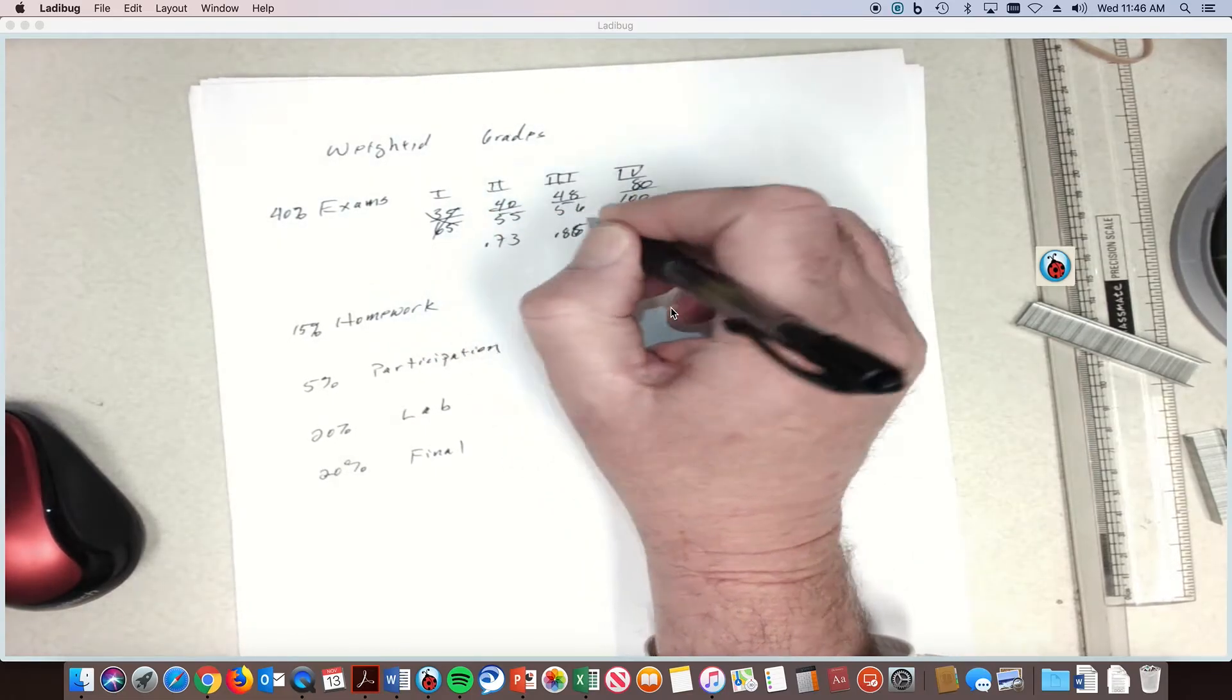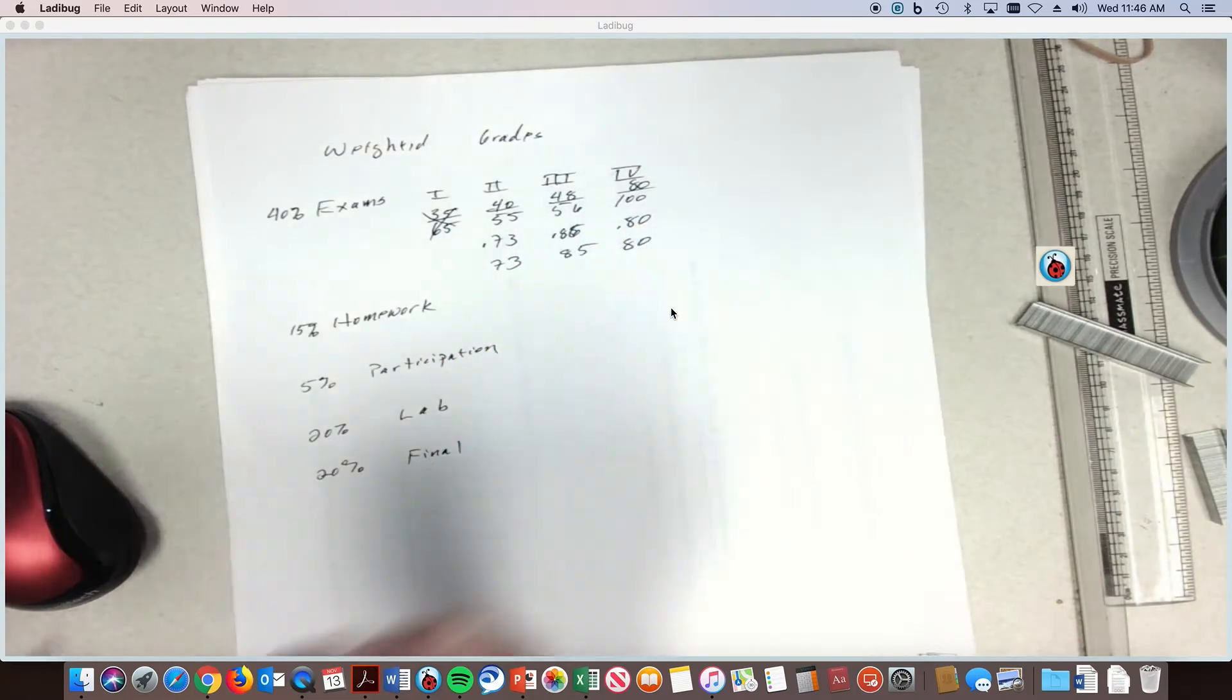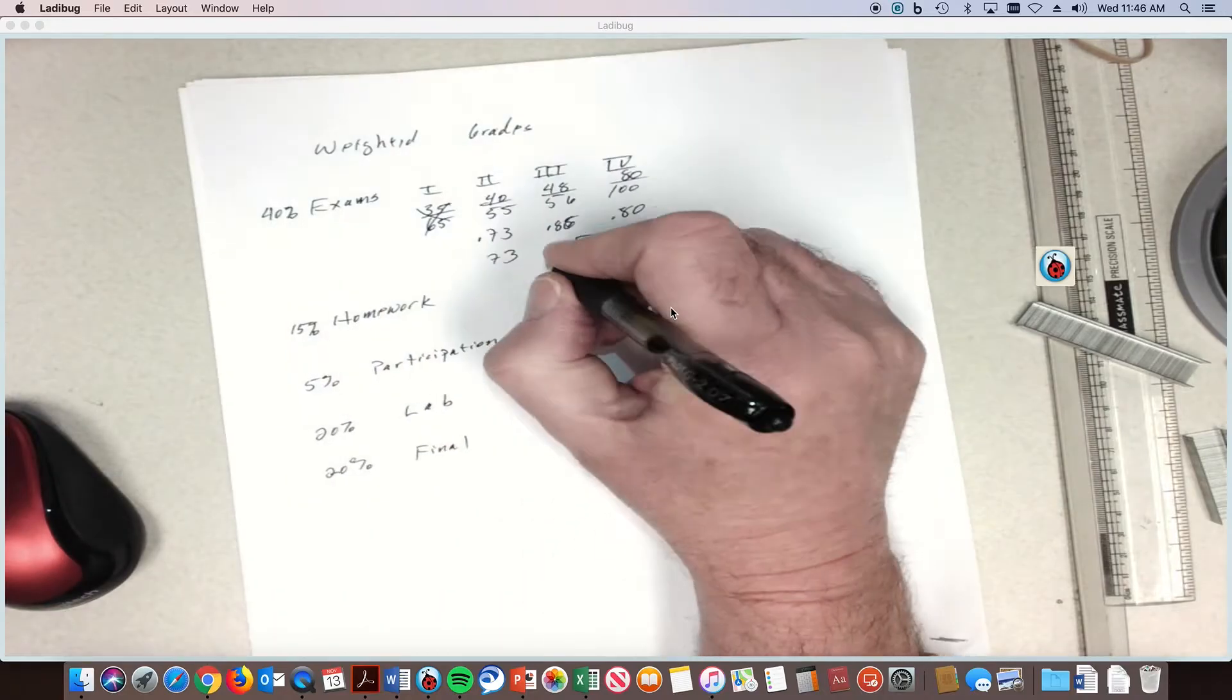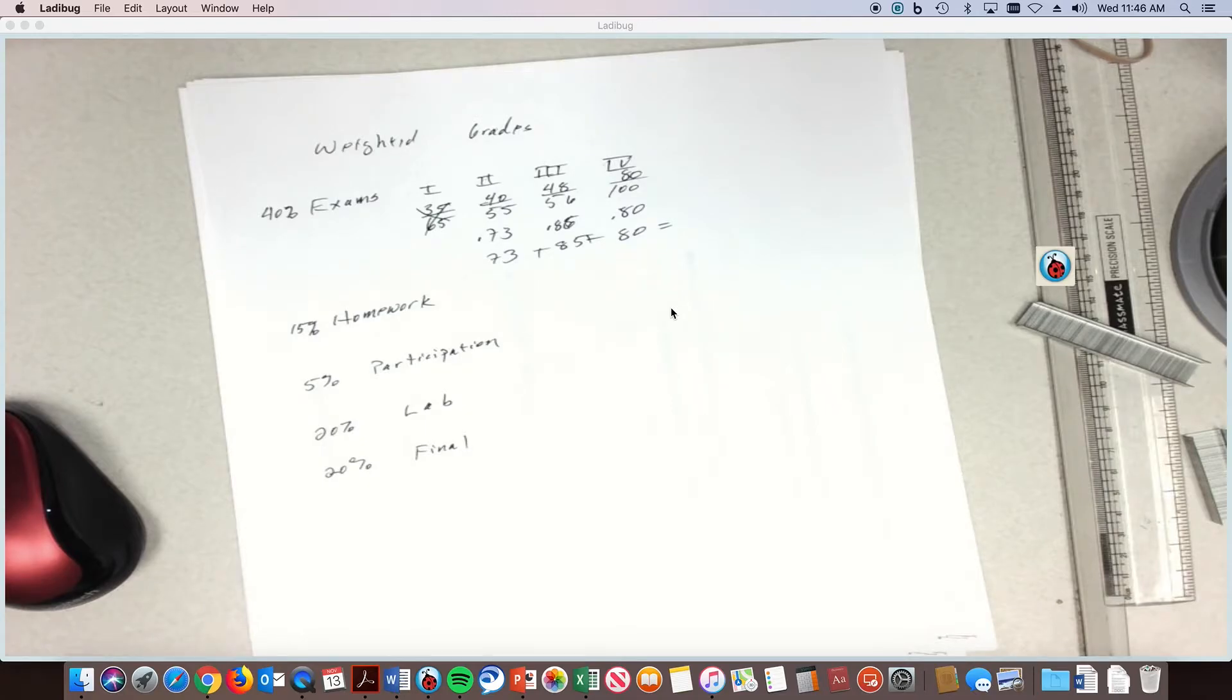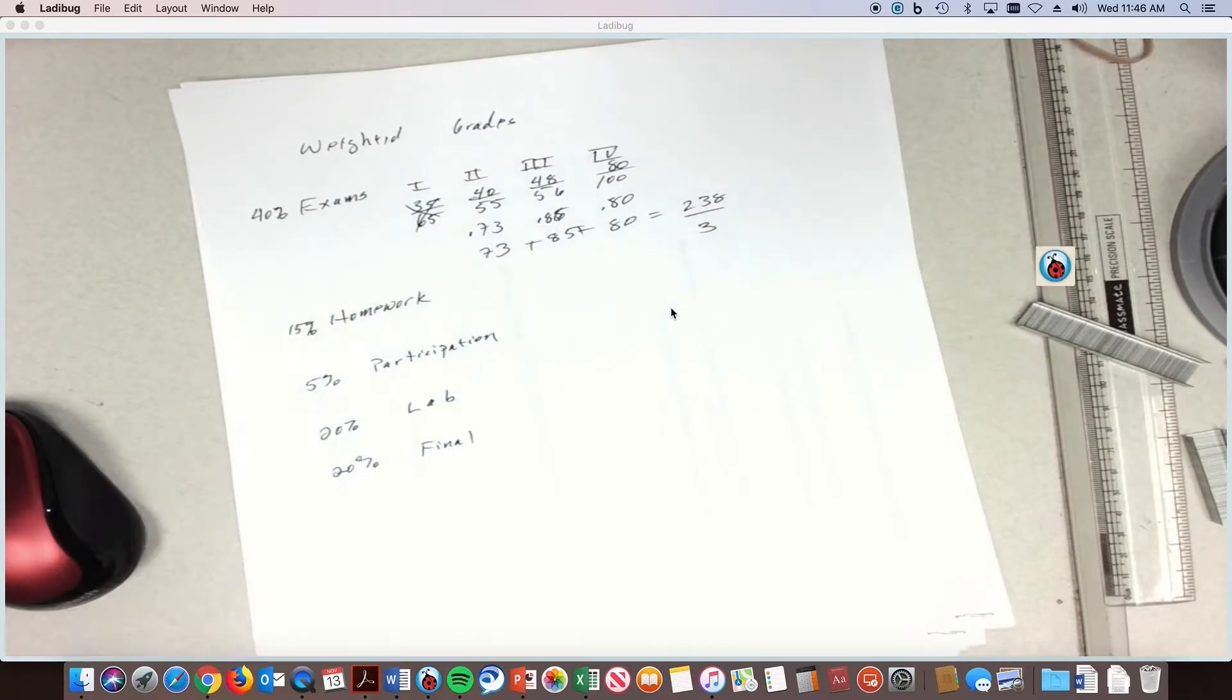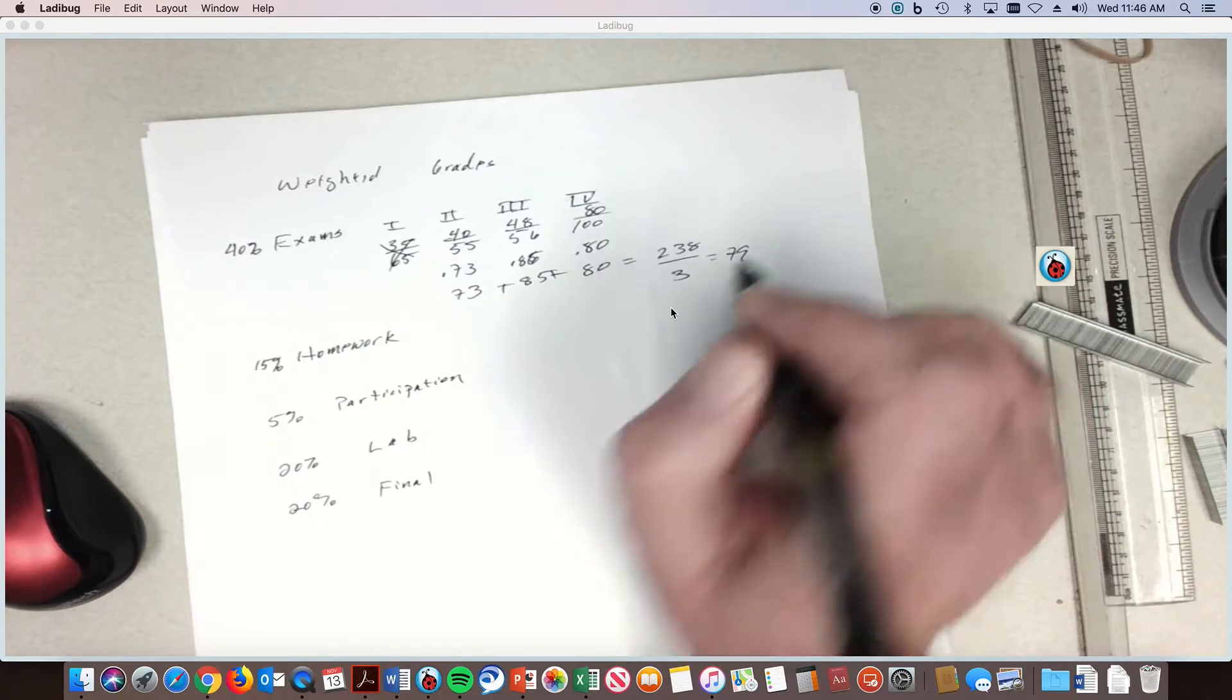Let's just make them 73, 85, 80. Now add those three up - 73 plus 85 is 158, that's 238, divide by 3 and you got a 79 percent on your homework score. Not bad.